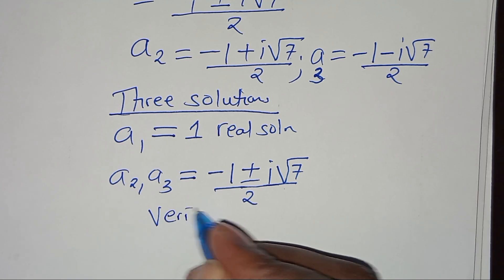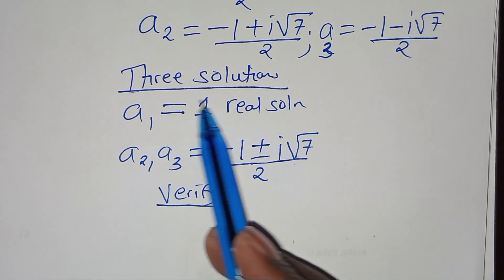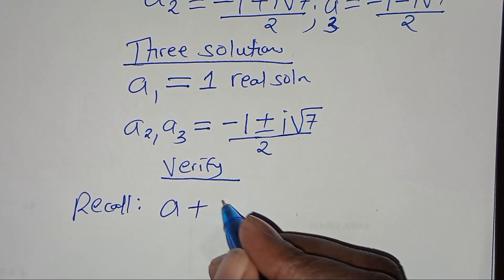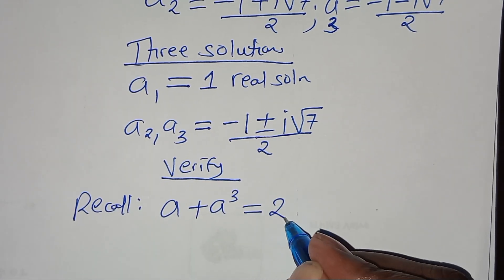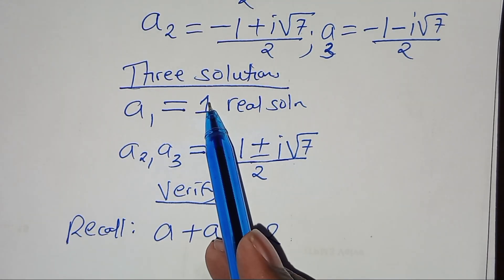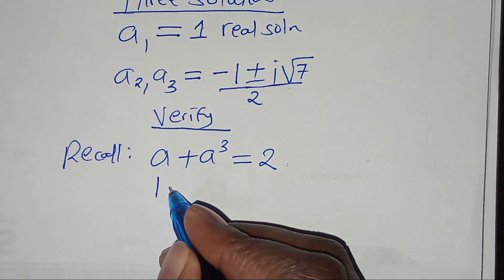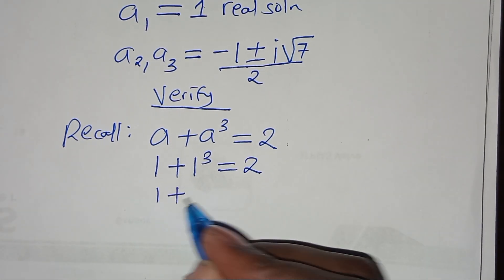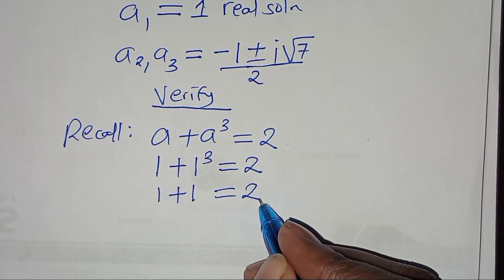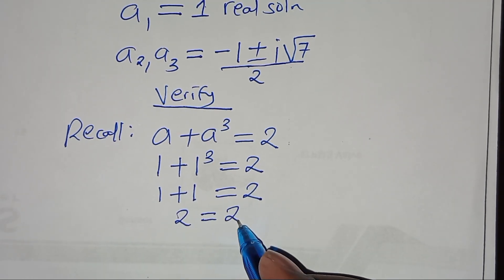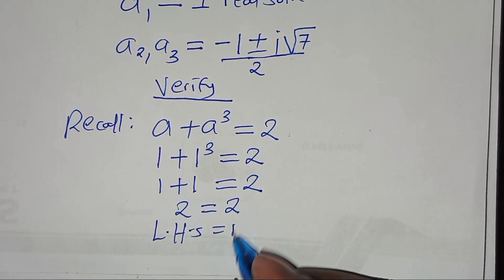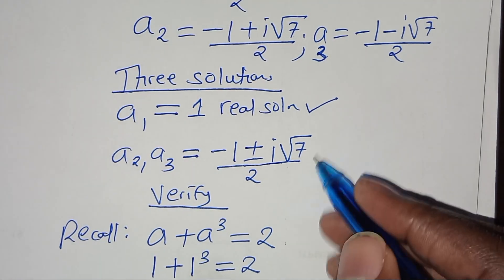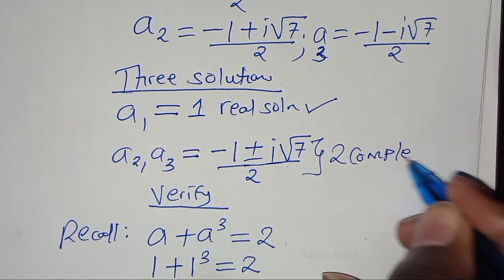Let's verify that a₁ equals 1 gives a real solution. Recall that a plus a to the power 3 is supposed to equal 2, and the value of a is 1. So we have 1 plus 1 cubed, which is 1 plus 1, and this equals 2. The left hand side equals the right hand side, confirming a₁ equals 1 is a valid real solution, while a₂ and a₃ are the two complex solutions.